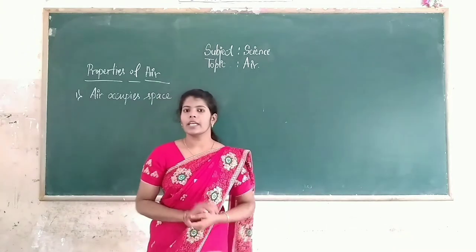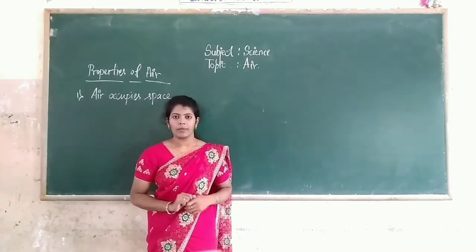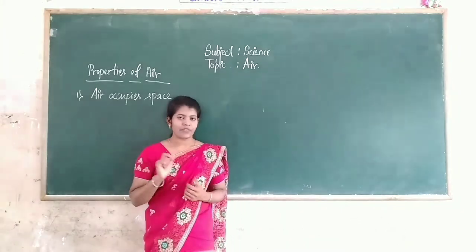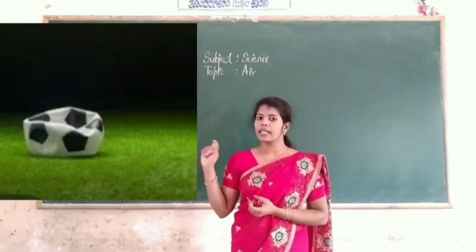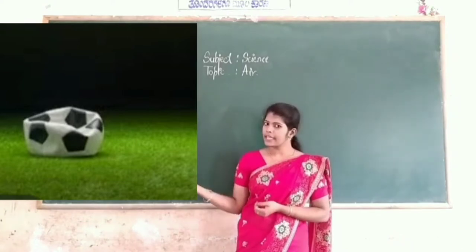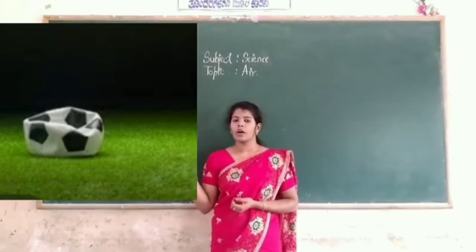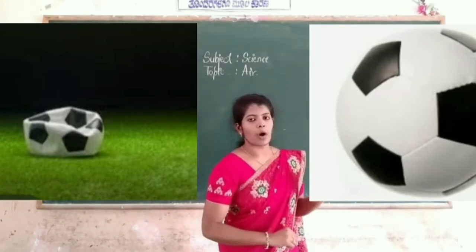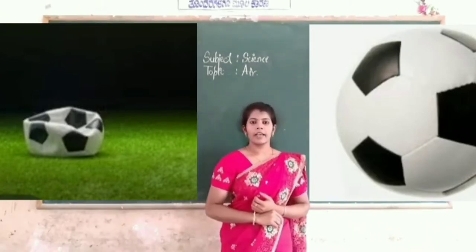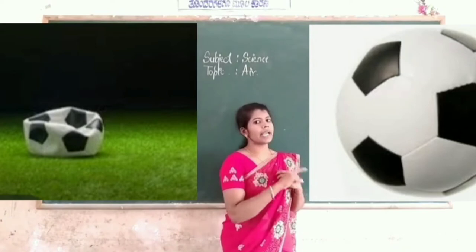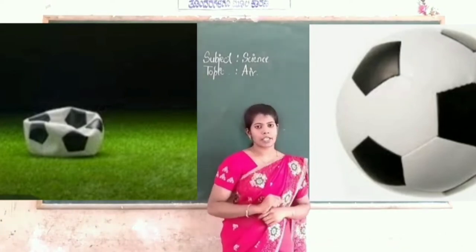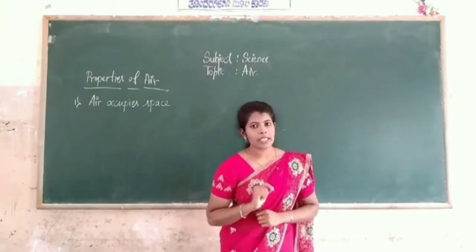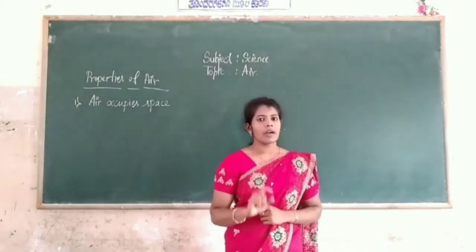Then let's see, students. If we have a volleyball, inside the ball air is filled. If there is no air, the ball is like a punctured ball. In this ball, air is filled — it changes in shape. It shows that air occupies space inside the ball.